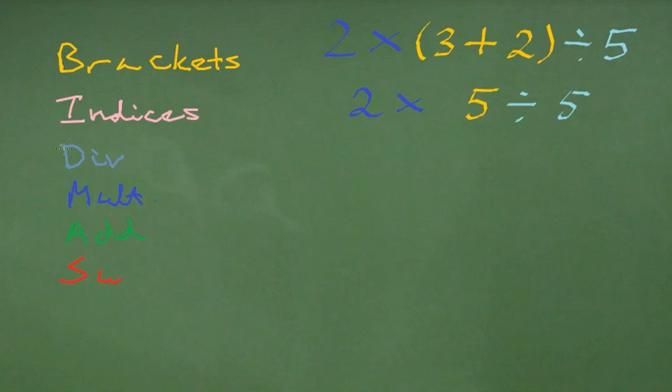So the next step on our list is to do the division next. We have 5 divided by 5 and that gives us 1. And then last of all, we've got the multiplication left. So we have 2 multiplied by 1 which gives us our final answer of 2.